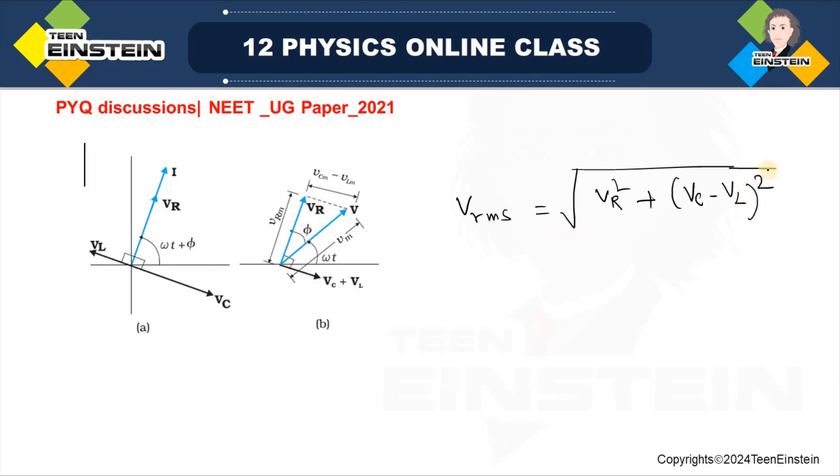Now, we need to find out the amplitude of this vector VRMS. So, how to get that? VRMS will be square root of VR square plus VC minus VL or VL minus VC. Both are same if you have this square.